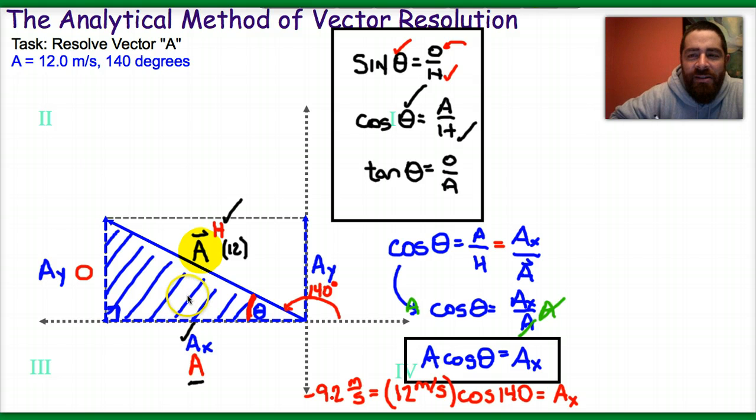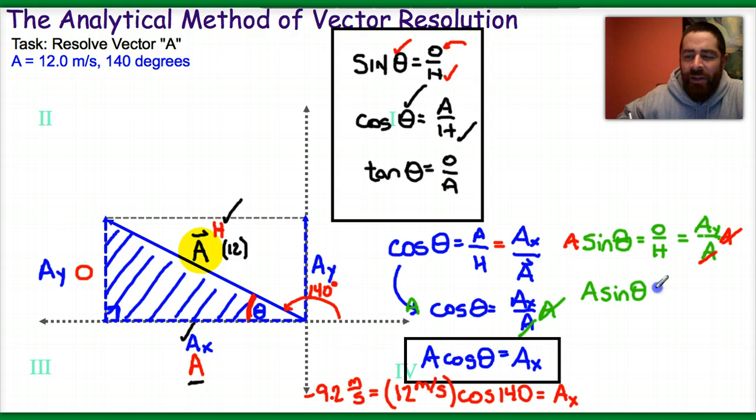So in a similar way, I can now say that the sine of theta is the ratio of the opposite side over the hypotenuse, or in physics terms, A_y over the actual vector A itself. Multiplying both sides of this by A, the A's cancel out on the right, and I'm left with the expression A times the sine of theta is equal to the y component.